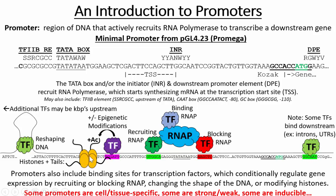Other transcription factors can bind to the DNA and change its shape — for example, forming loops in the DNA. What this does is bring distant regions of genomic sequence closer to the promoter. That's important because sometimes you'll find what we call enhancer elements: sequences where other transcription factors bind that, when brought closer to the promoter, can actually influence transcription from your gene.